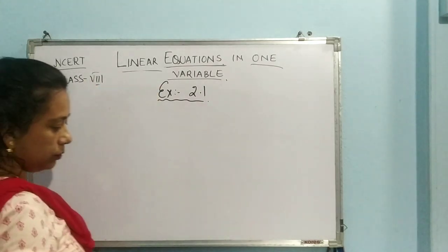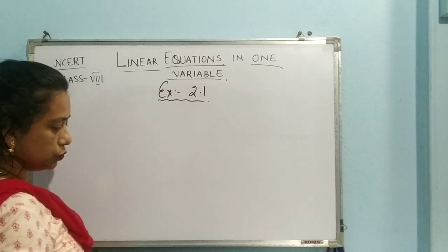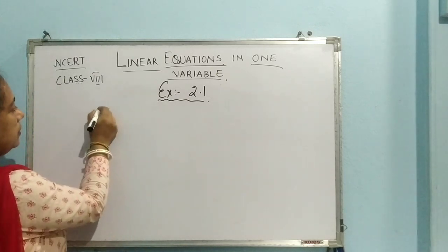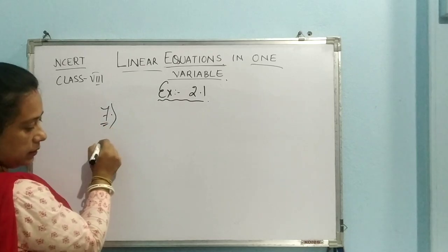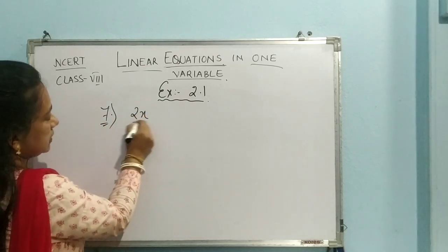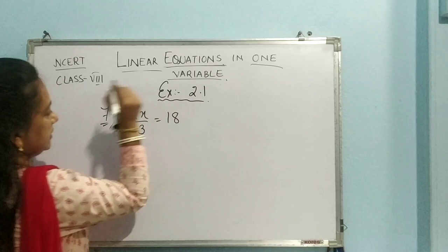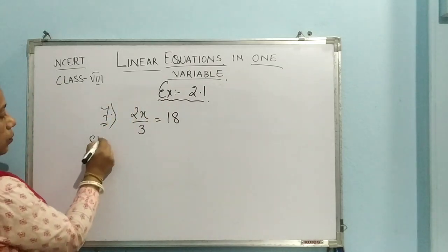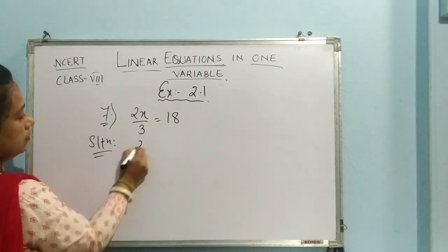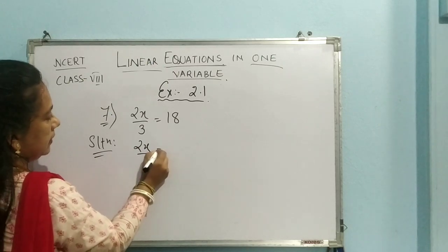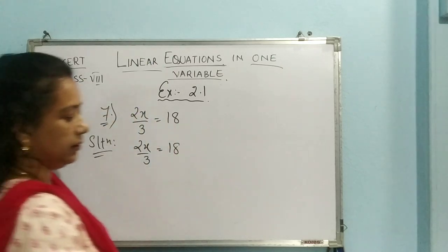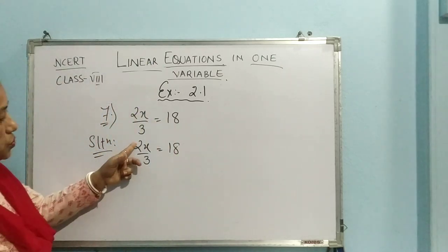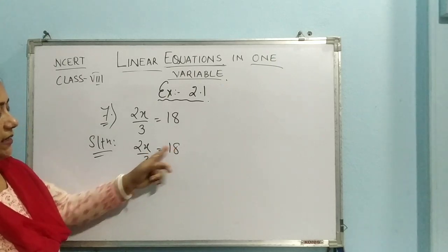Now, let us move on to suppose question number 7. The question is 2x by 3 equal to 18. Now, what is to be done here?